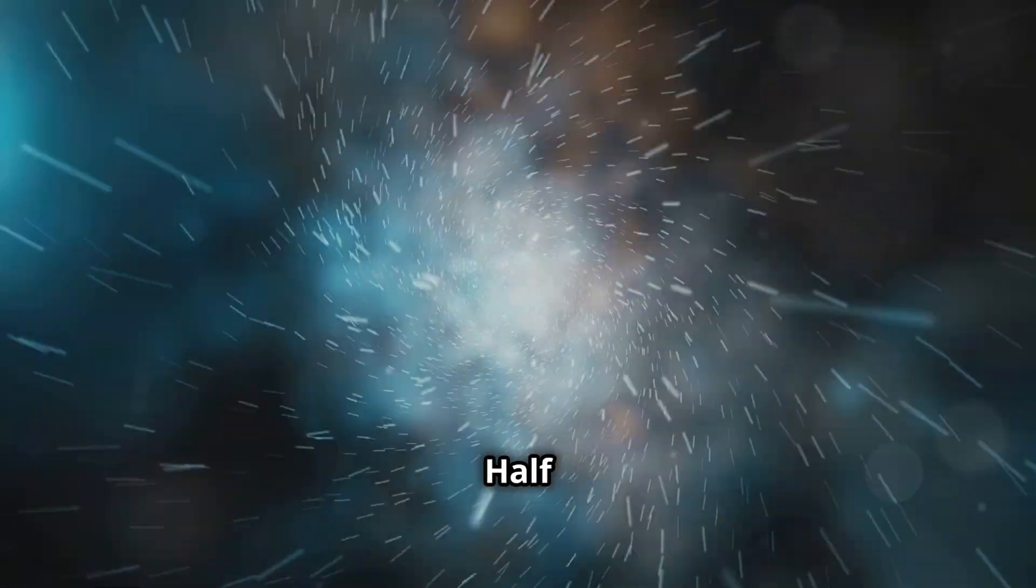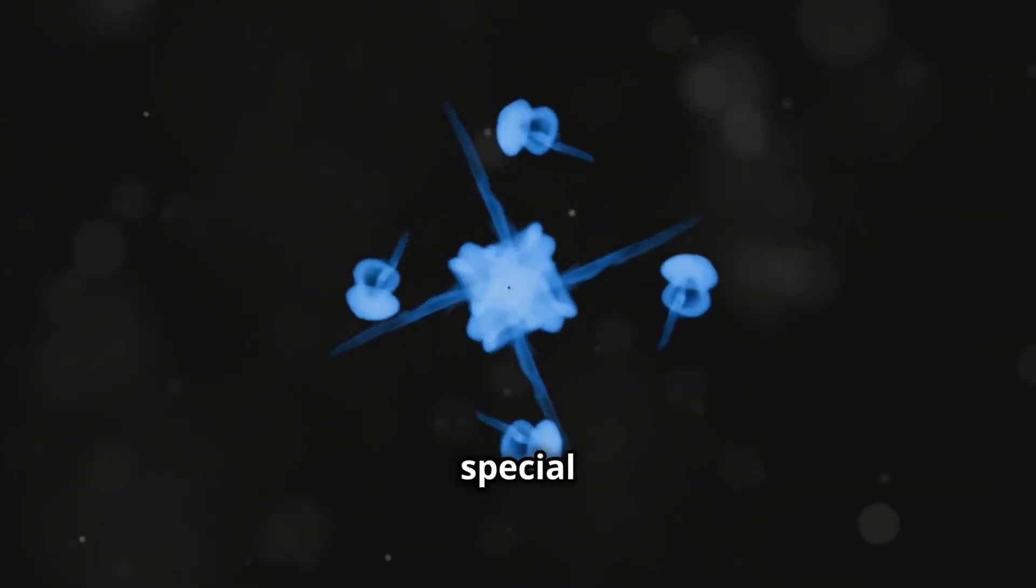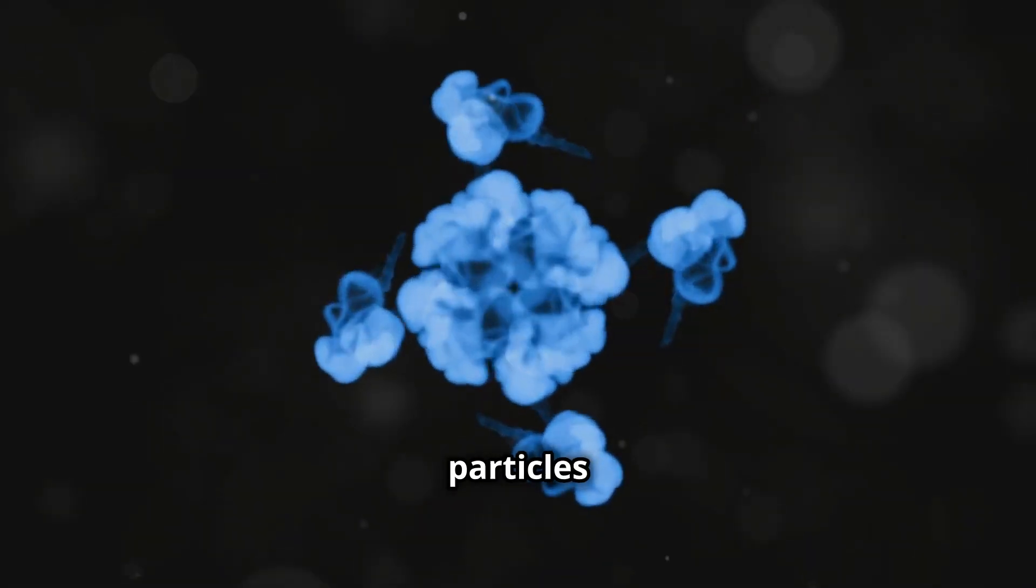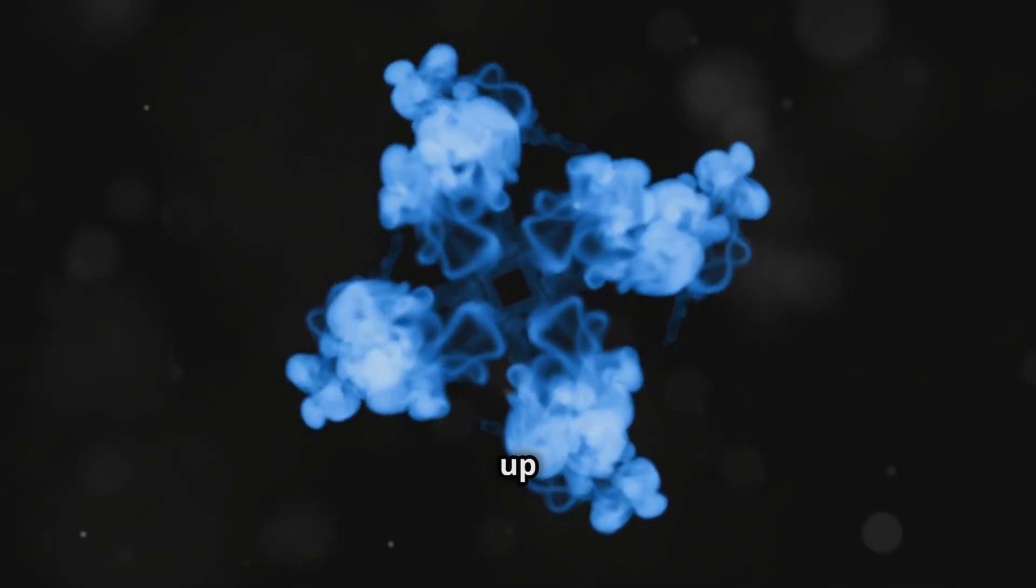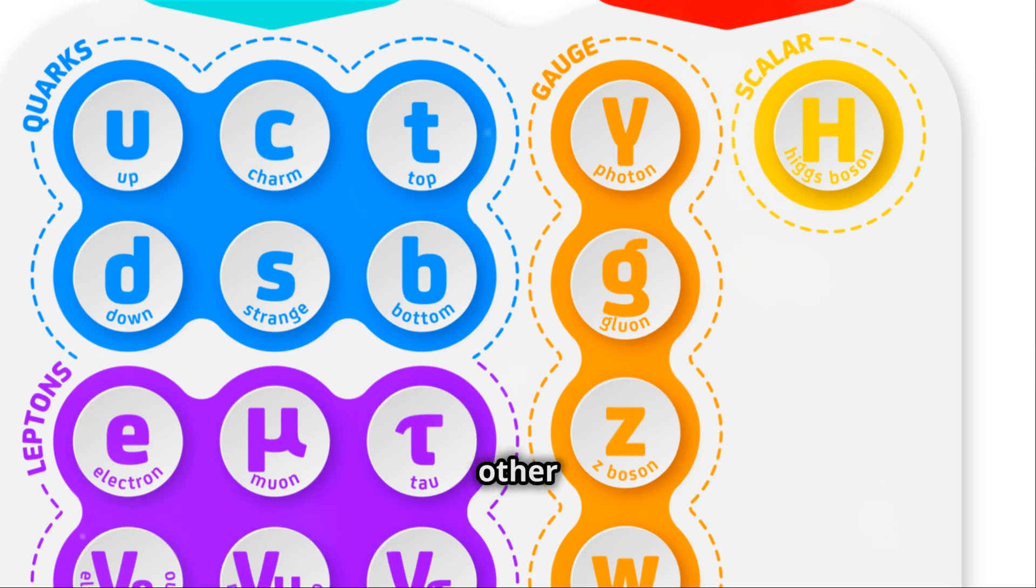Leptons, the other half of matter. In the vast and intricate world of particle physics, leptons hold a special place. They are fundamental particles that, along with quarks, make up the building blocks of matter. Now let's turn our attention to leptons, the other group of fermions.